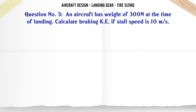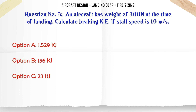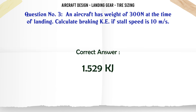An aircraft has a weight of 300 N at the time of landing. Calculate the braking kinetic energy if stall speed is 10 m/s. A) 1.529 kg, B) 156 kg, C) 23 kg, D) 23.45 kg. The correct answer is 1.529 kg.